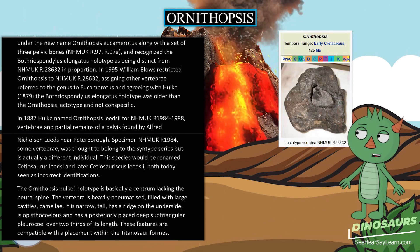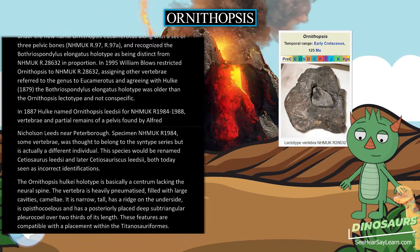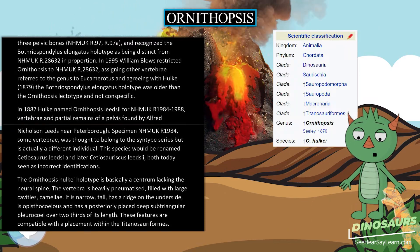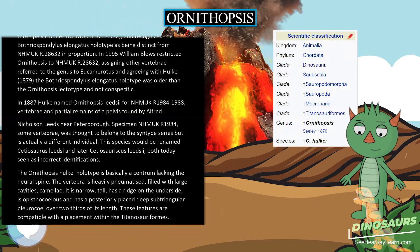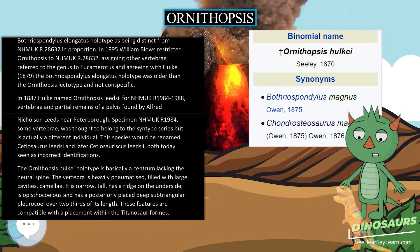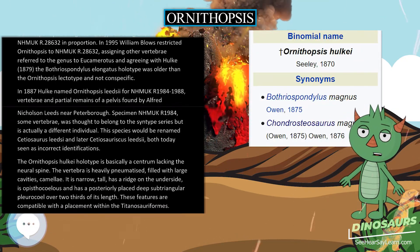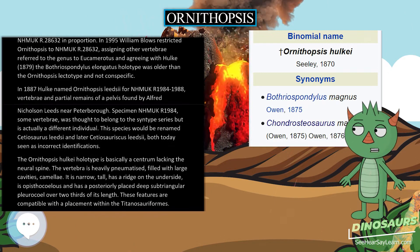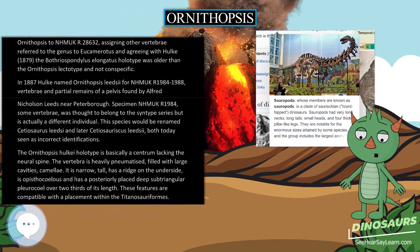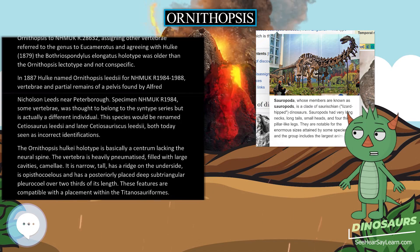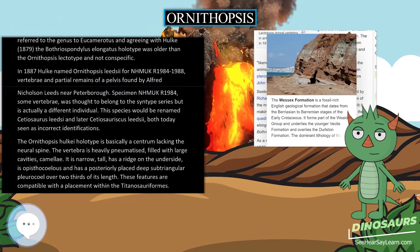The Ornithopsis hulcae holotype is basically a centrum lacking the neural spine. The vertebra is heavily pneumatized, filled with large cavities. It is narrow and tall, has a ridge on the underside, is opisthocolous, and has a posteriorly placed deep sub-triangular pleurocoele over two-thirds of its length. These features are compatible with a placement within the Titanosauriformes.